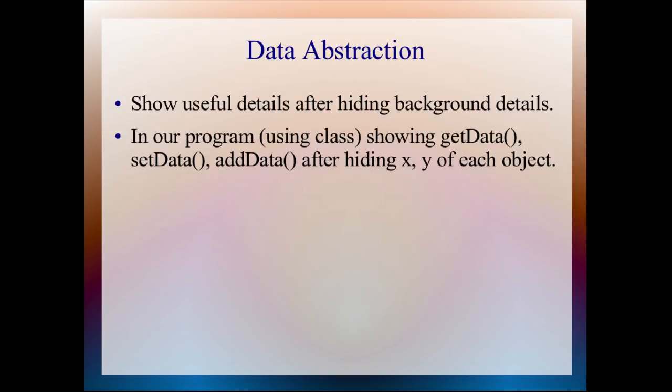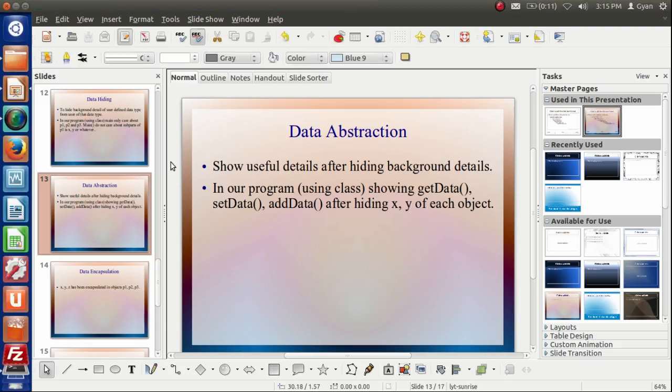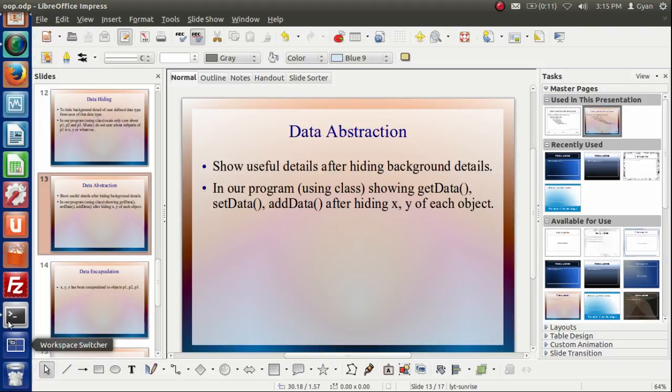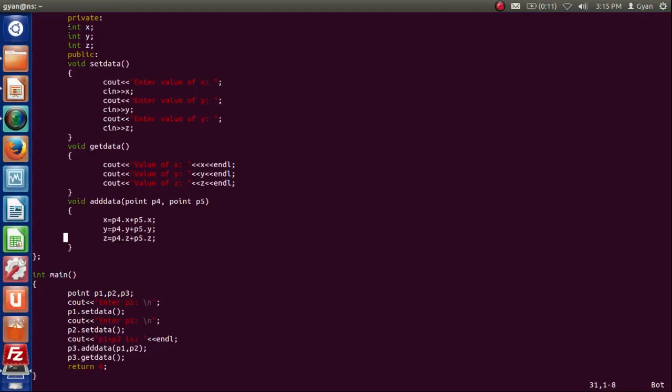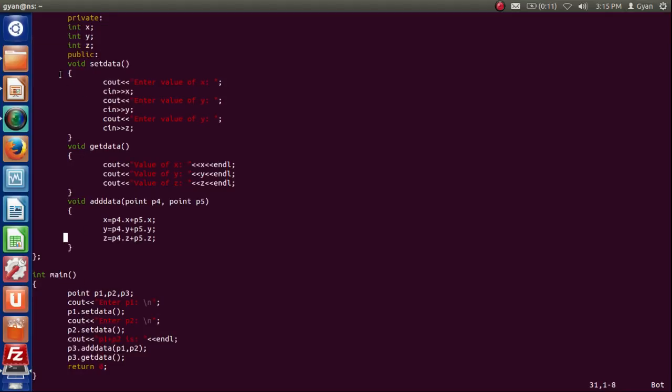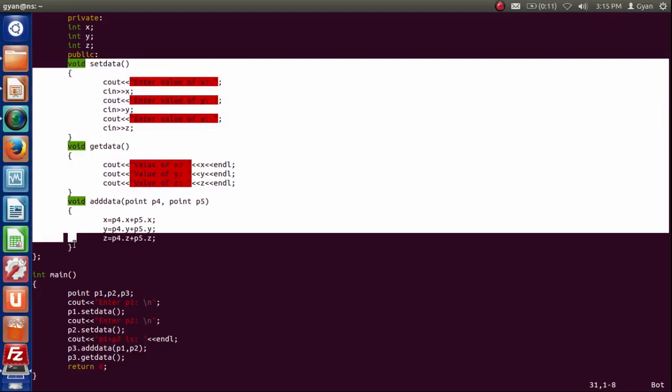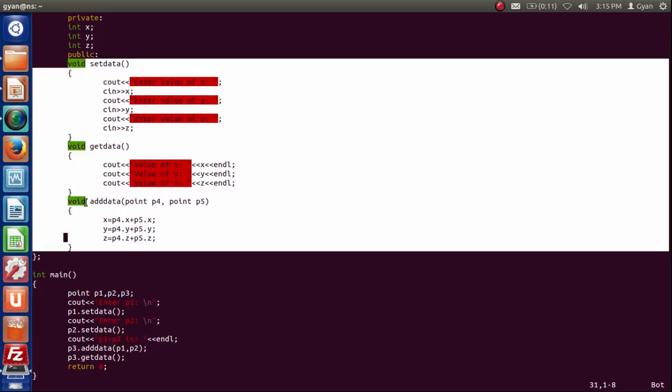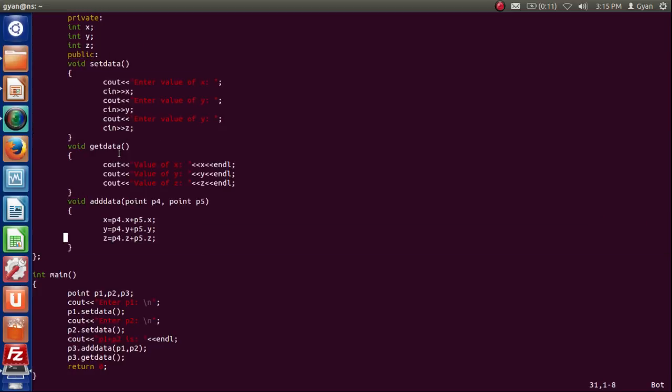Same thing here is data abstraction. In your program, it's good that we have hidden these machinery x, y, z from the main. But these three functions are like steering, clutch, and gear using which main can drive the car.